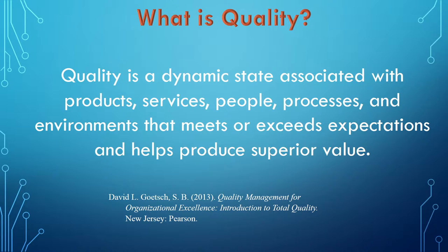The first thing is that quality is a dynamic state. What does that mean? It basically means that quality can change — quality is not static. What may be of good quality today may not be tomorrow. As an example, when the iPhone first came out, in everybody's mind it was the best phone ever. There was no competition. But now, if you look at the market, there are other companies — for example, Samsung Galaxy. Some people swear that the Galaxy is way better than the iPhone. That's a simple example to explain this dynamic state of quality.